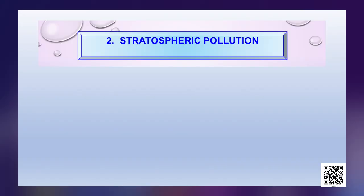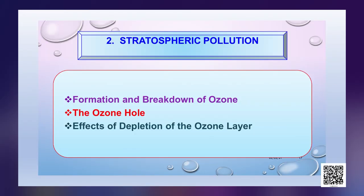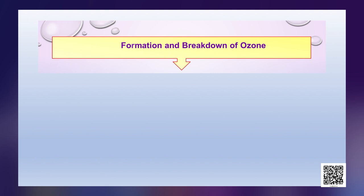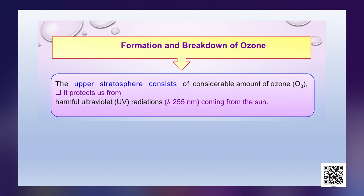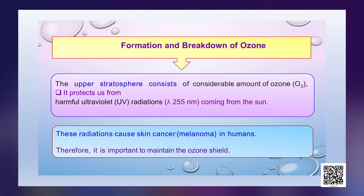After understanding tropospheric pollution, let us now see what stratospheric pollution is. The upper stratosphere consists of a considerable amount of ozone which protects us from harmful UV radiations with wavelength around 255 nm coming from the sun. These radiations cause skin cancer (melanoma) in humans. Therefore, it is important to maintain the ozone shield.